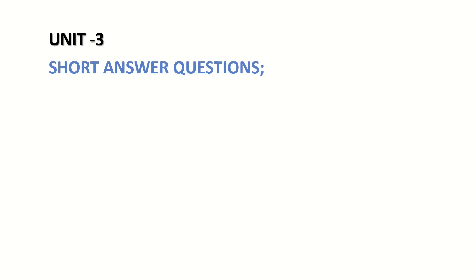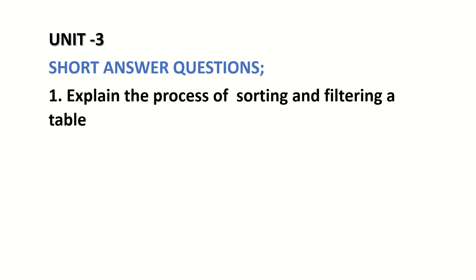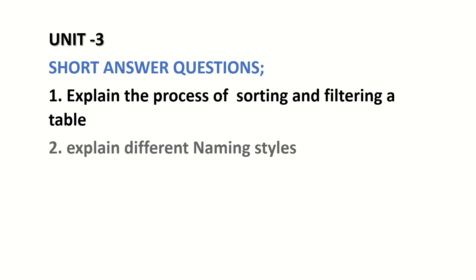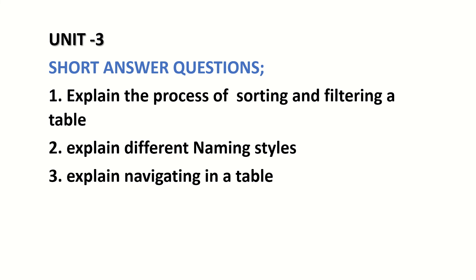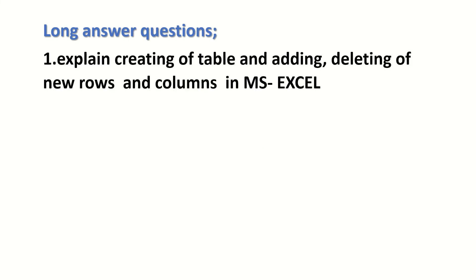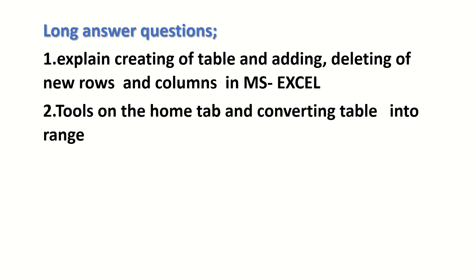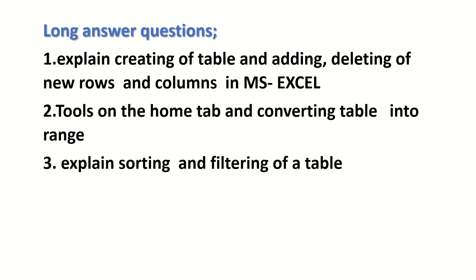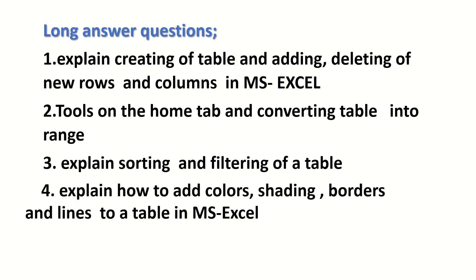Unit 3. Short answers. Explain the process of sorting and filtering a table. Explain different naming styles. Explain navigating in a table. Long questions: Explain creating a table and adding and deleting new rows and columns in MS Excel. Tools on Home tab and converting table into range. Explain sorting and filtering of a table. Explain how to add colors, shading, borders, and lines to a table in MS Excel.